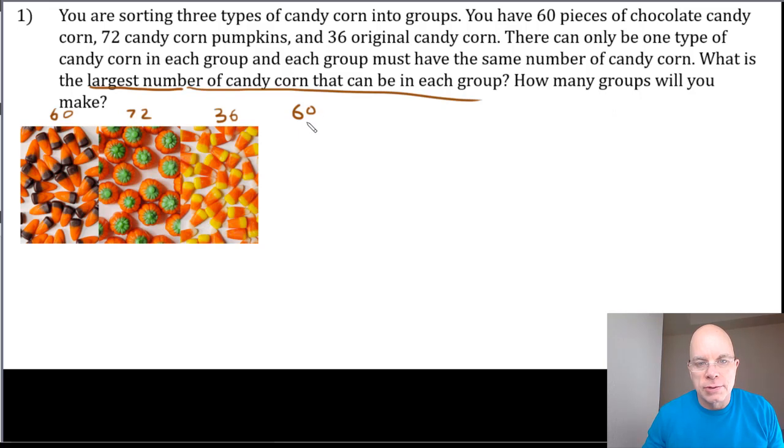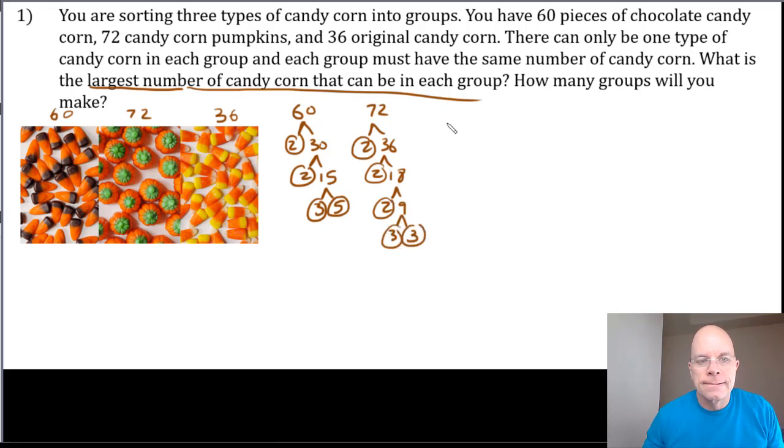But first let's find the GCF by using our Venn diagram model. 60 is 2 times 30, 30 is 2 times 15, and 15 is 3 times 5. 72 is 2 times 36, 36 is 2 times 18, 18 is 2 times 9, and 9 is 3 times 3. 36 is 2 times 18, and 18 is 2 times 9, and 9 is 3 times 3.